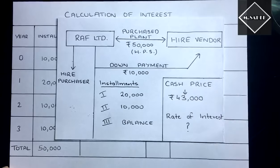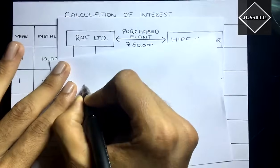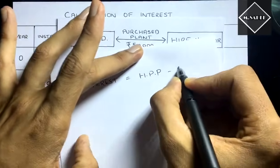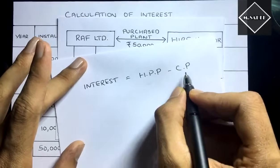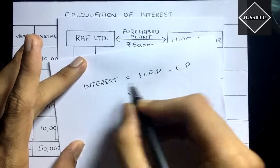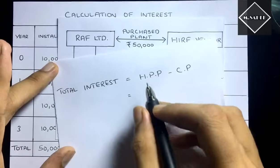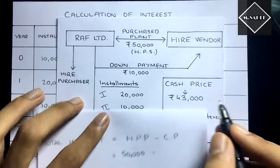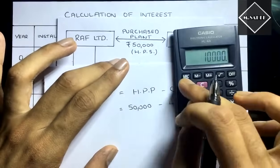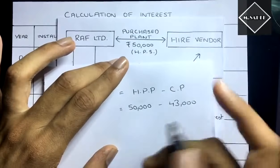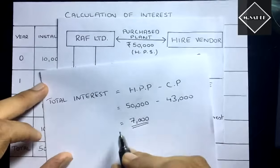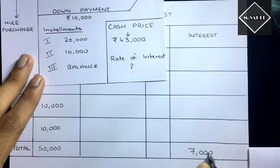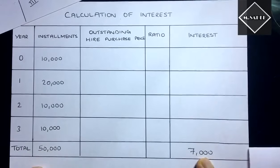Interest is the difference between higher purchase price and cash price. Higher purchase price is 50,000; cash price is 43,000. So total interest equals 50,000 minus 43,000, which is 7,000. We now have the total interest of 7,000, which we write directly in the interest total column.